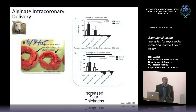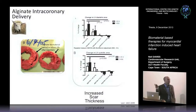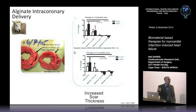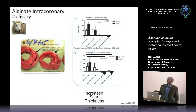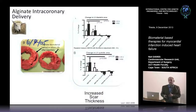Alginate, extracted from seaweed, is the closest to the clinic — there's a large international clinical trial ongoing that we await with great interest. This study was done in sheep. They injected into the coronaries, and because the heart tissue is leaky where infarction occurred, the alginate leaked out of the coronaries and into the heart wall. The preservation of ejection fraction was proportional to the amount injected, along with increased scar thickness and preservation of wall thickness.